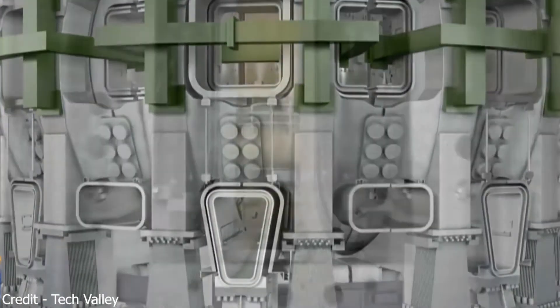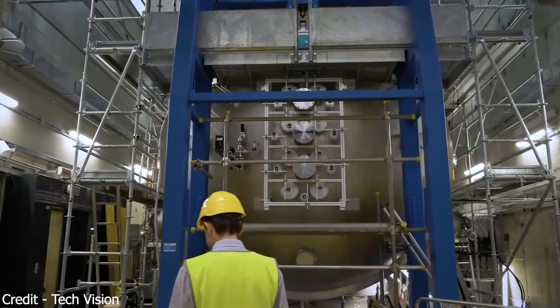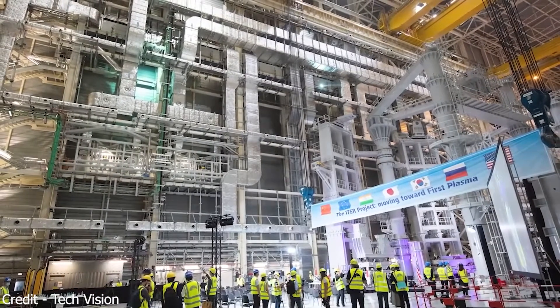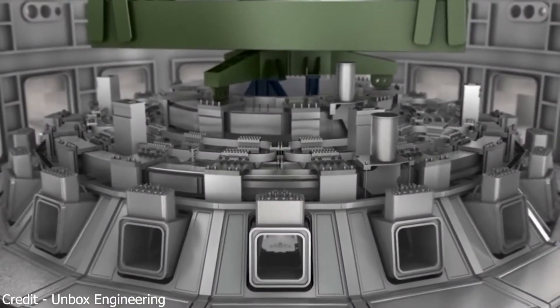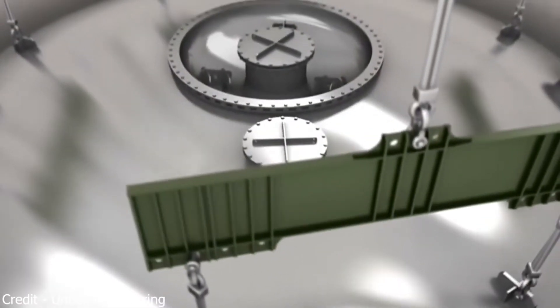The ITER is also known as the largest puzzle in the world, with its estimated 1 million components, and the parallel installation and integration of plant systems such as radio frequency heating, fuel cycle, cryogenic, cooling water, vacuum, control, and high electric voltage.